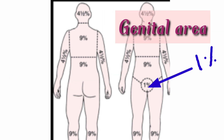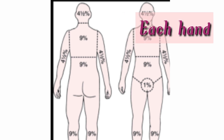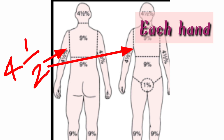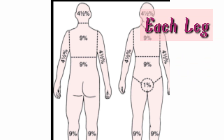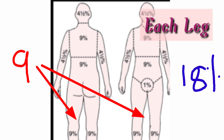We can give 1% for the genital area. Coming to hands: anterior and posterior part of each hand — anterior part is 4.5%, posterior part is 4.5%, so one total hand is 9%. Coming to legs: anterior and posterior part of each leg — anterior part of one leg is 9% and posterior part of one leg is 9%, so total one leg is 18%.